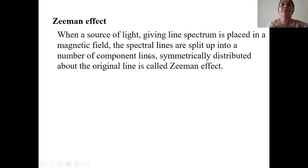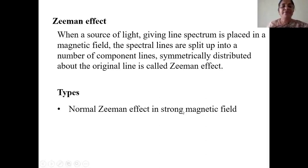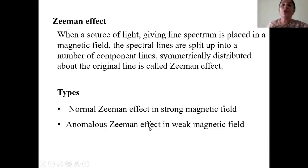He kept the lamp in the magnetic field. He observed that in the presence of the magnetic field, each spectral line split up into many component lines symmetrically distributed about the original line — this is called Zeeman effect. There are two types: normal Zeeman effect, which generally takes place in a strong magnetic field, and anomalous Zeeman effect, which takes place when a weak magnetic field is applied.